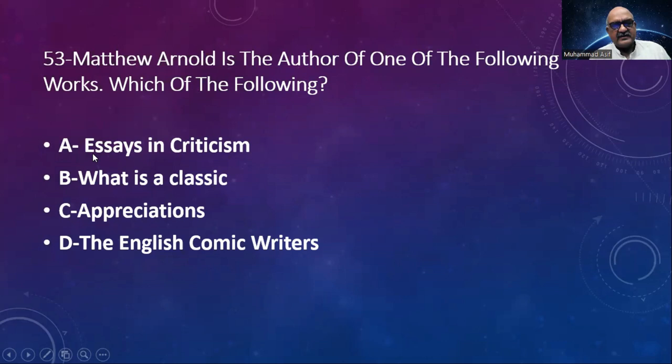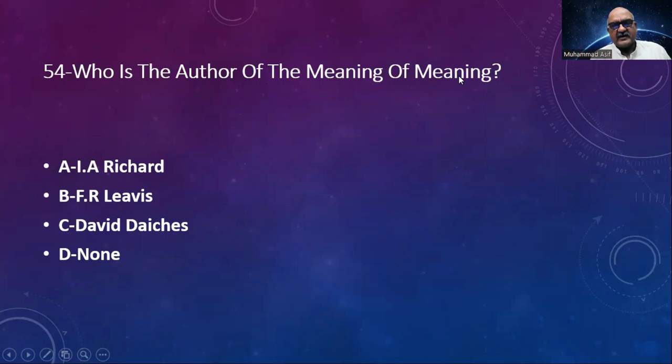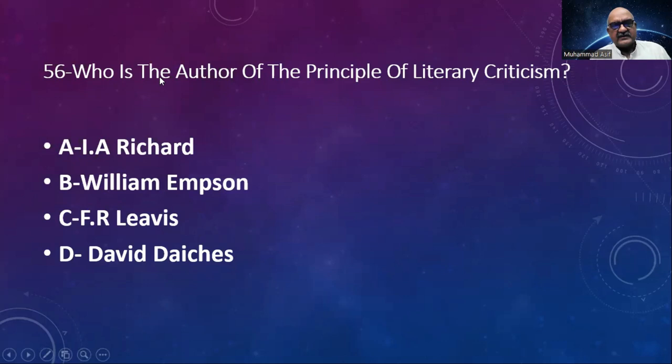Number 54: Who is the author of The Meaning of Meaning? Options: I.A. Richards, F.R. Leavis, David Daiches, none. The answer is I.A. Richards. Number 55 and 56: Who is the author of Principles of Literary Criticism? Options: I.A. Richards, William Empson, F.R. Leavis, David Daiches. The answer is I.A. Richards.